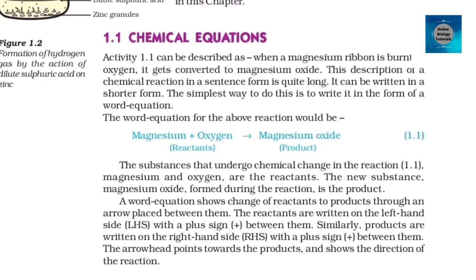Chemical equations. Activity 1.1 can be described as: when a magnesium ribbon is burnt in oxygen, it gets converted to magnesium oxide. This description of a chemical reaction in a sentence form is quite long. It can be written in a shorter form. The simplest way to do this is to write it in the form of a word equation. The word equation for the above reaction would be: Magnesium + Oxygen → Magnesium oxide (equation 1.1). In this reaction, magnesium and oxygen are the reactants and magnesium oxide is the product. A word equation shows the change of reactants to products through an arrow placed between them.